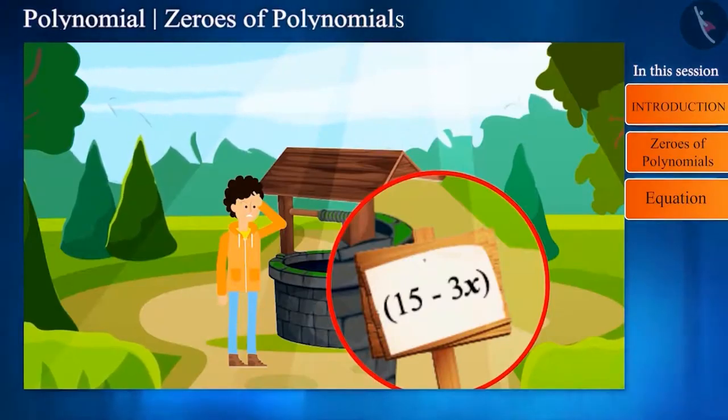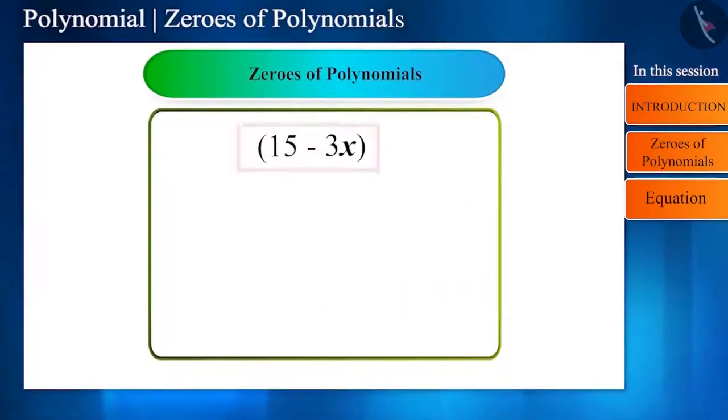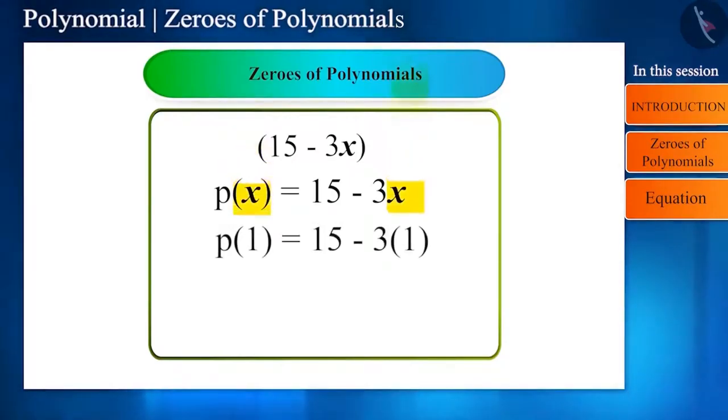Let's find the math in this story now. A linear polynomial is written on the board and Rahul also received money according to that. Let's see how. If the polynomial written is p(x) = 15 - 3x, when Rahul dropped 1 rupee, according to this polynomial, variable x was replaced by 1 and he got 12 rupees.